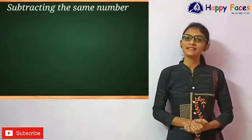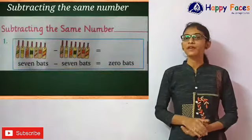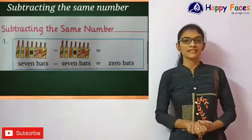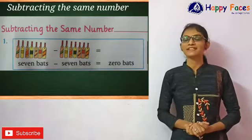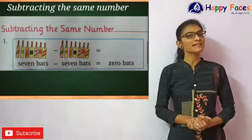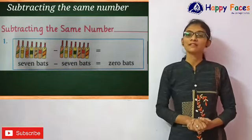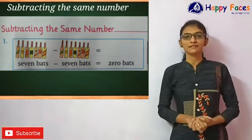Now let us take few examples on this property. Look here. Here is the first example. What do you see in this picture? Yes, here are 7 bats minus 7 bats. Now we have to find out the answer.